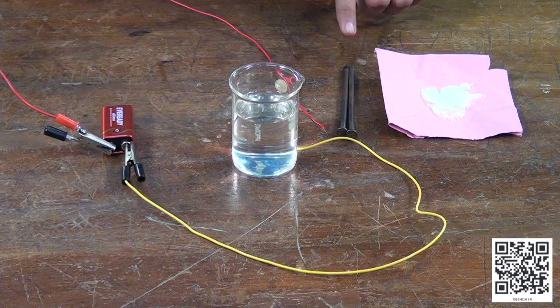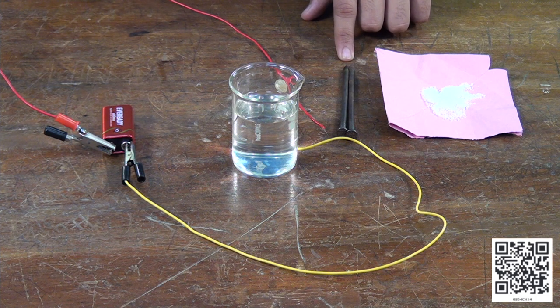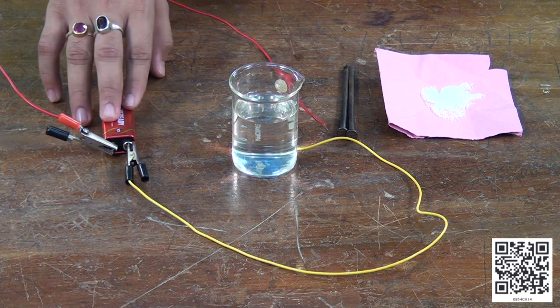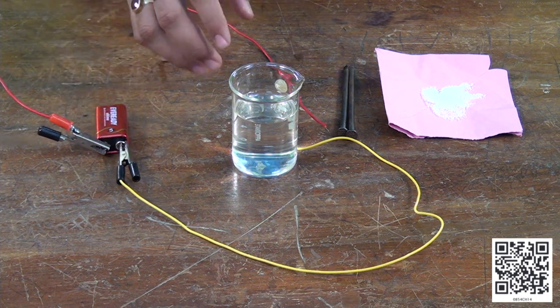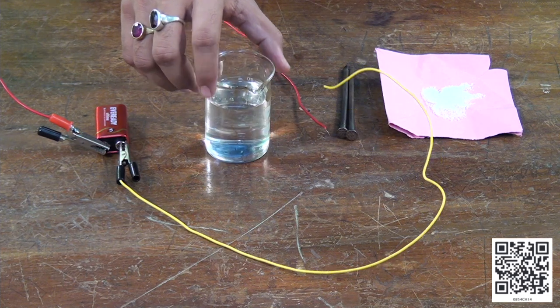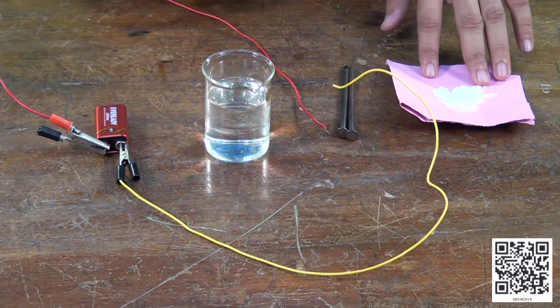For this activity we will require two carbon rods which can be taken out from a battery or we can use two iron nails, a battery connected with wires, a beaker with distilled water and salt.